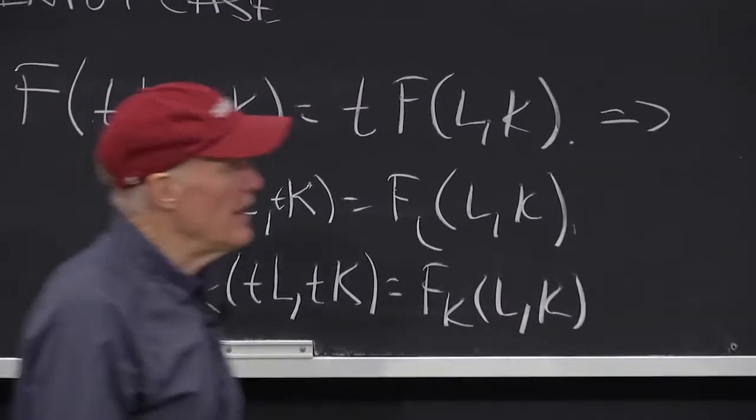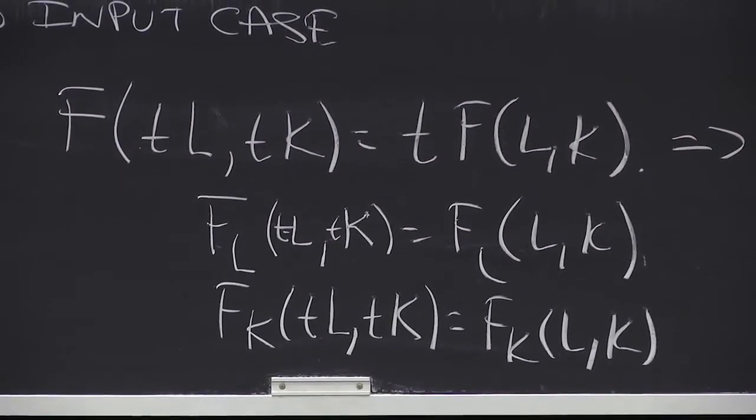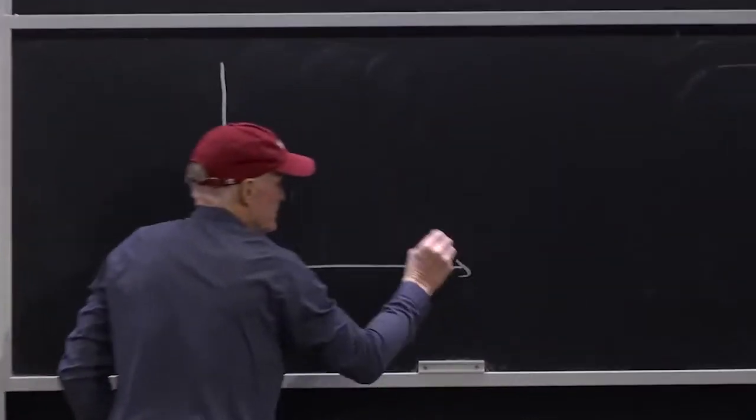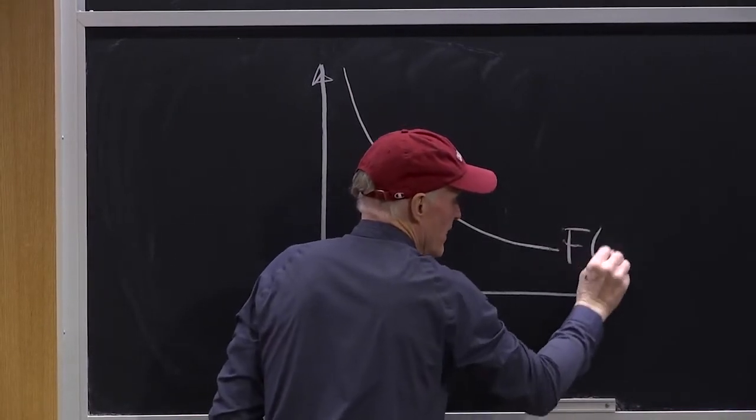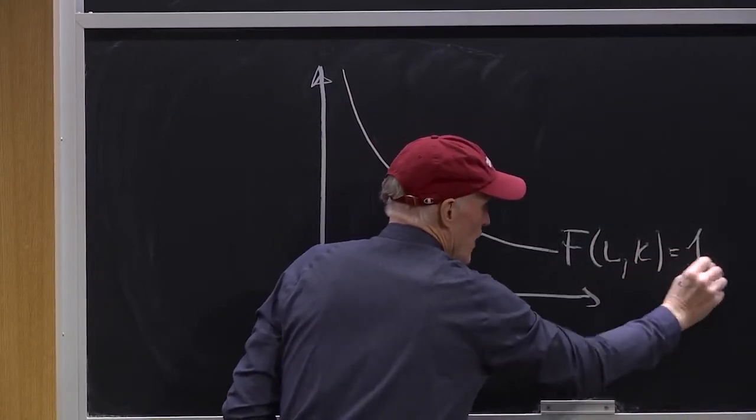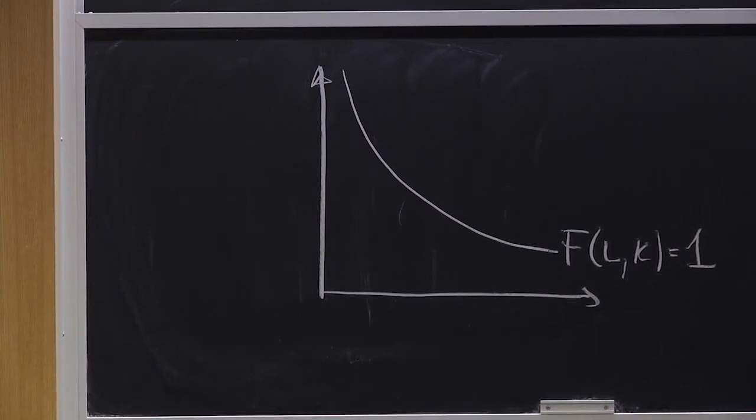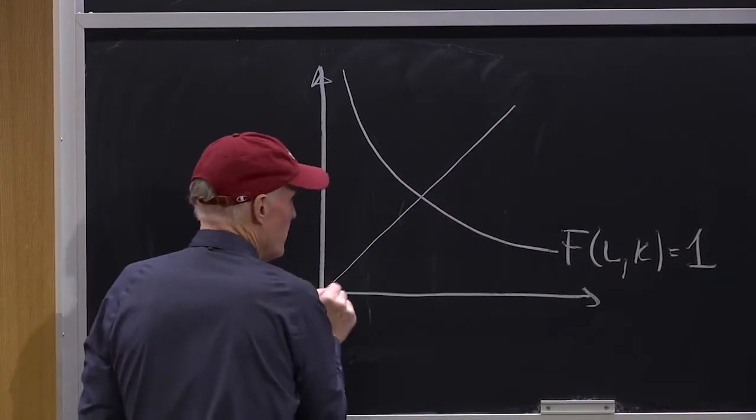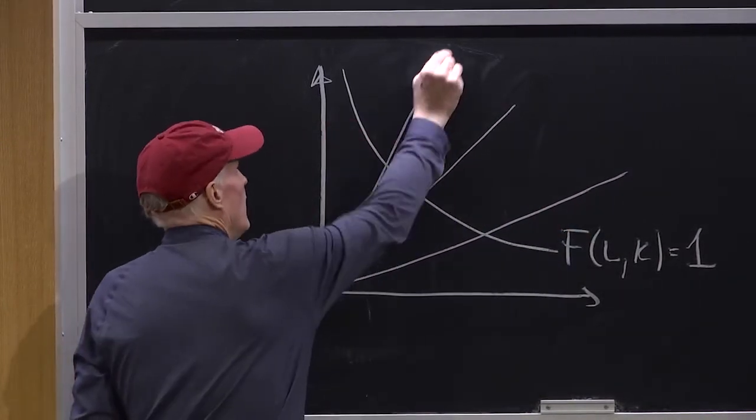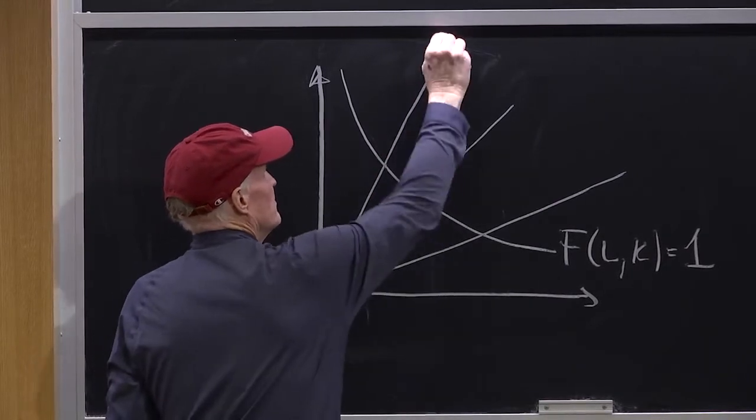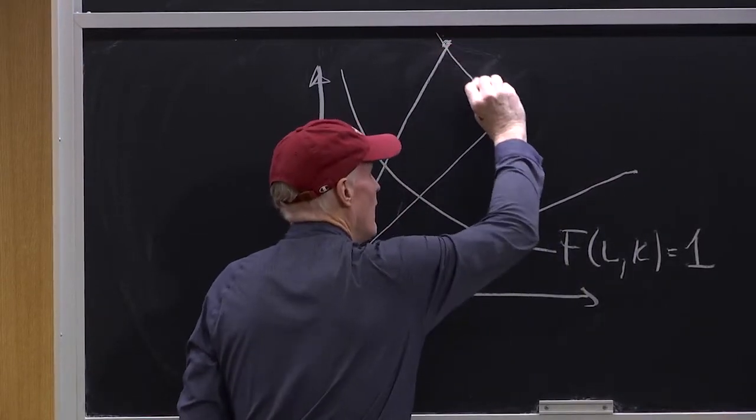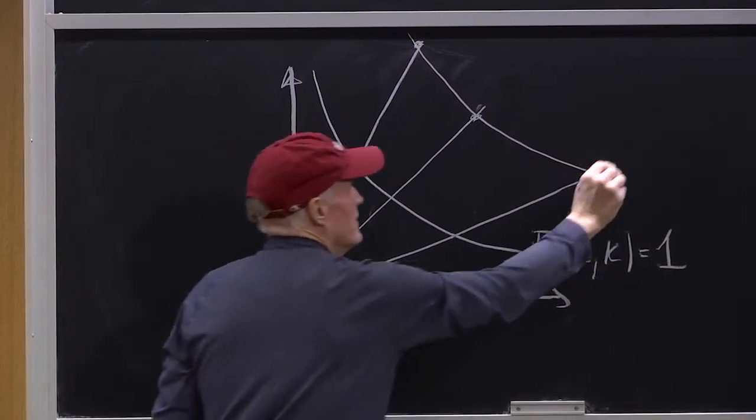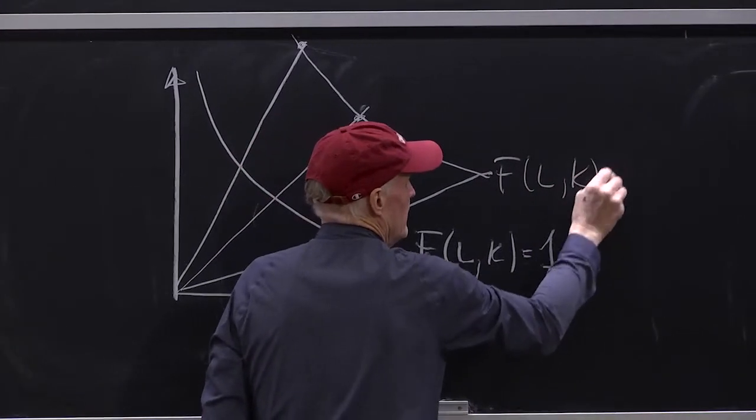Effectively, what's going on, if you think about it in terms of the isoquants of the production function, is that if I look at the unit isoquant, this is F of L and K equals one. So those are all the combinations of output that produce one unit of output. And I go out along a ray, you just double this distance at each point.